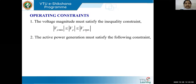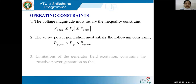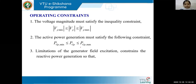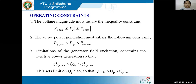The second operating constraint concerns active power generation: PGP_min ≤ PGP ≤ PGP_max. The generation at that particular bus must maintain this limit. The third constraint is reactive power: limitations of generator field excitations constrain reactive power generation, expressed as QGP_min ≤ QGP ≤ QGP_max.